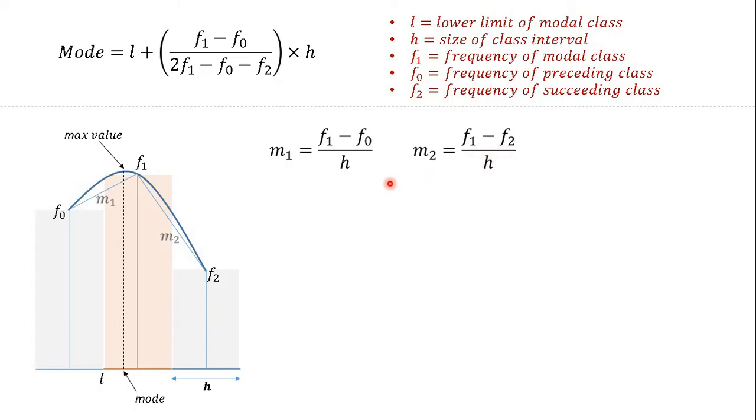And now one interesting property of parabola is that the slope of line connecting any two points of a parabola - here we have slope M1 connecting these two points of parabola - is equal to the slope of tangent to the parabola at the midpoint of the domains of the corresponding points.